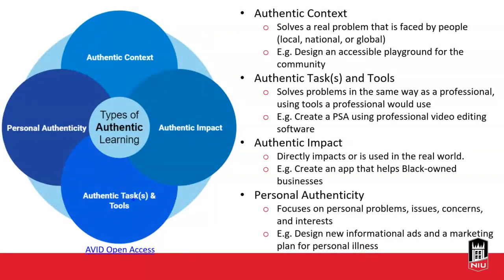To get into more about authenticity, you can break it down into four overlapping types of authentic learning. There's authentic context — solving a real problem faced by real people, like designing accessible playgrounds for the community. There are authentic tasks and tools — using the same tools a professional would use, like computer-aided design to design that playground, or video editing software to create a PSA relevant to the community.